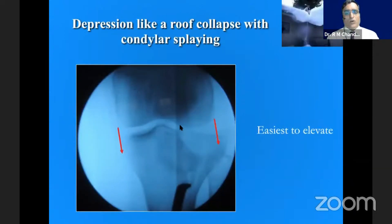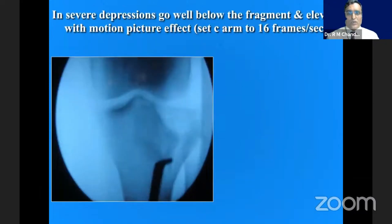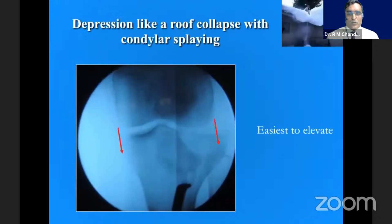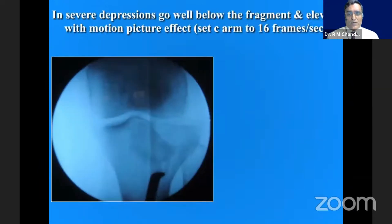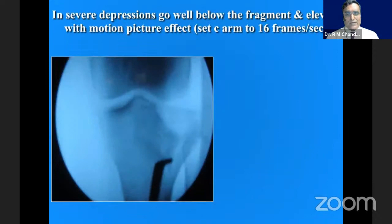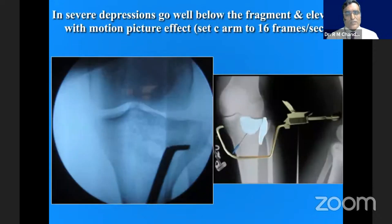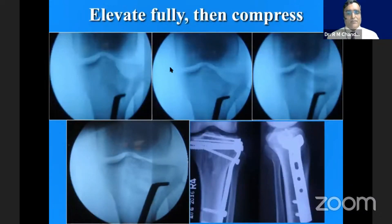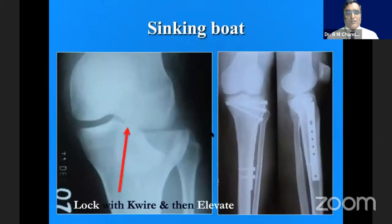A whole condylar roof collapse is the easiest to elevate. I usually advise a cine effect — set the SIAM to 16 frames per second so we can get this effect and see exactly how much elevation needs to be done. Once completely restored, the void can be reduced by compressing the fragment and fixing it appropriately, giving an optimum articular subchondral surface and reduction.